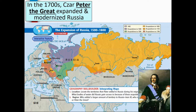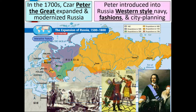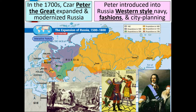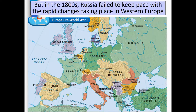In the 1700s, Tsar Peter the Great expanded and modernized Russia. Peter introduced into Russia Western-style navy, fashions, and city planning. But in the 1800s, Russia failed to keep pace with the rapid changes taking place in Western Europe.